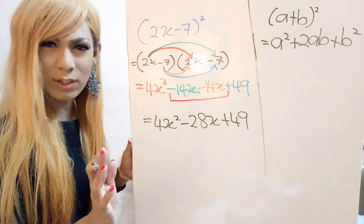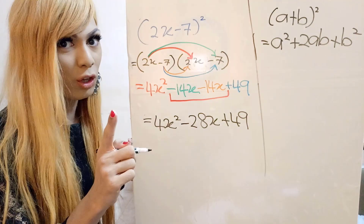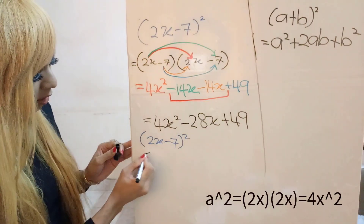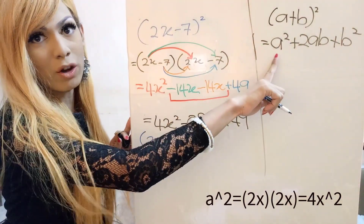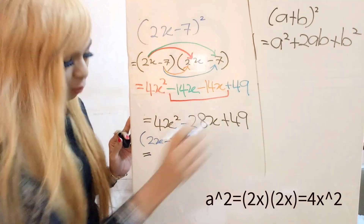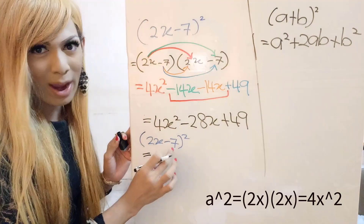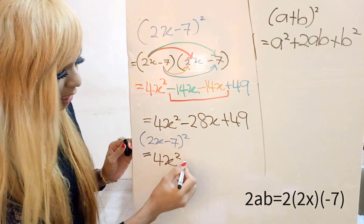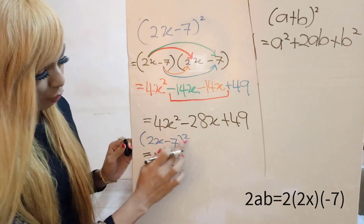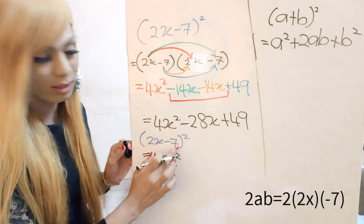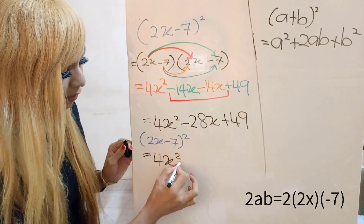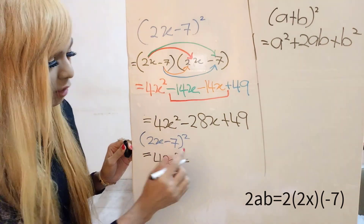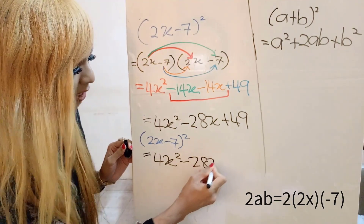Now let's do the same question using the binomial formula. First, a squared: so (2x) squared equals 4x squared. Then plus 2ab: that's 2 times 2x times negative 7. 2 times 2 is 4, and 4 times 7 is 28, so we get negative 28x.